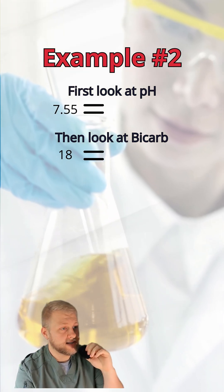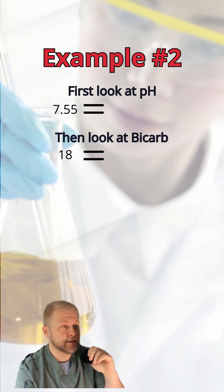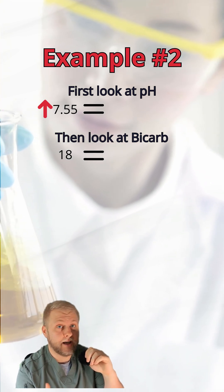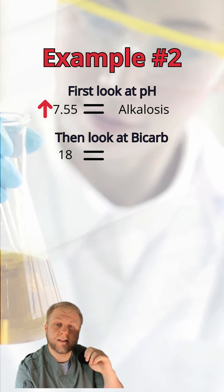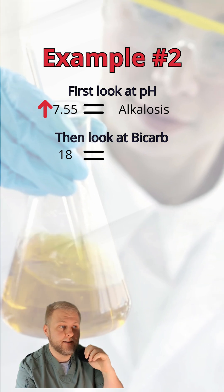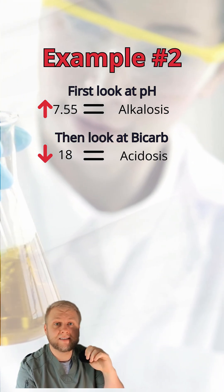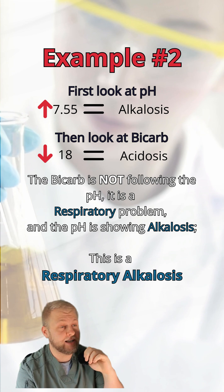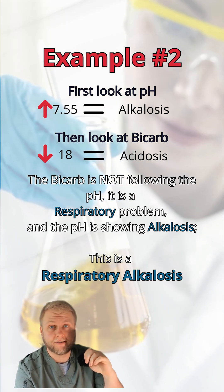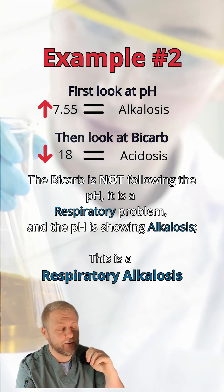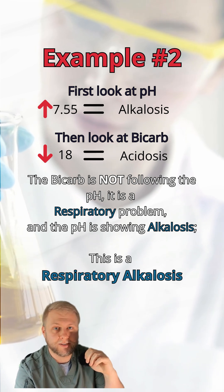For example number two, it's going to be a little different. First, look at the pH — it is 7.55, which is alkalosis, an alkalotic problem. Next, look at the bicarb — it's still 18, which means it's not following the pH, so they are not friends. That makes it a respiratory problem. Put those two together and you have a respiratory alkalosis.